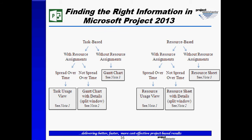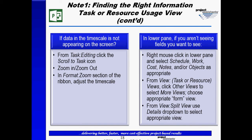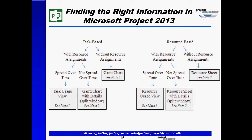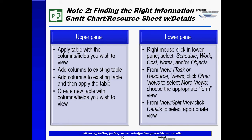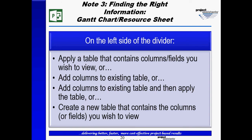For example, if I went to the task usage view and wanted to know how to manipulate that view, I can go to the next slide — it tells me what happens on the left side of the divider, what happens on the right side of the divider, what about the data in the time scale, and what about the information in the lower pane. Similarly, if I were to look at the Gantt chart with resource assignments not spread over time, I would go to note number two, which gives information about what's in the upper pane and what's in the lower pane. The same is true for the resource usage and resource sheet views, each with their corresponding notes.